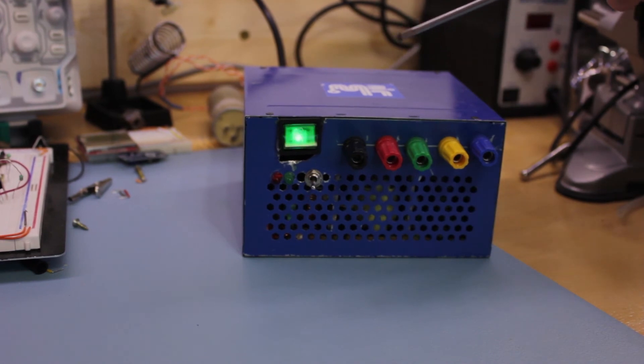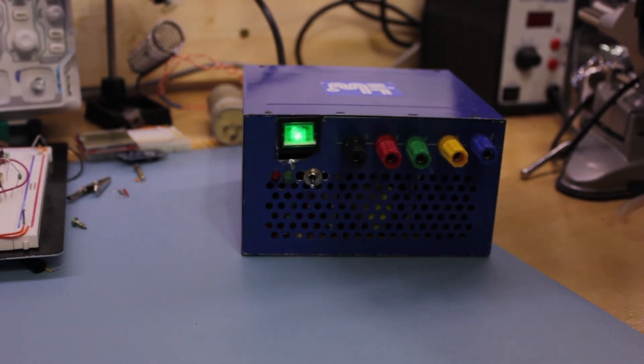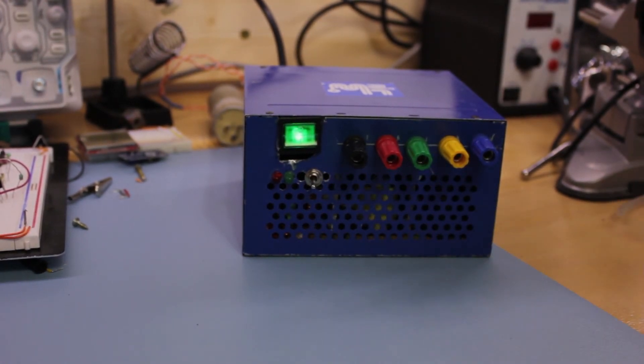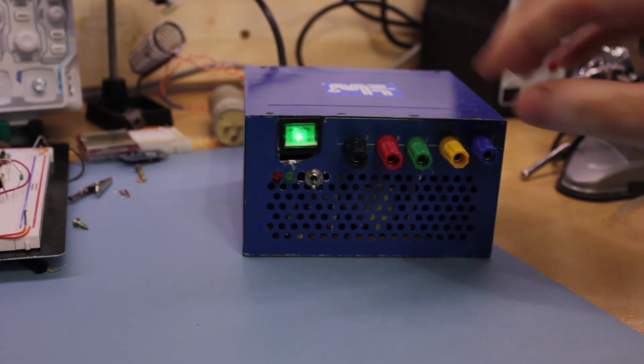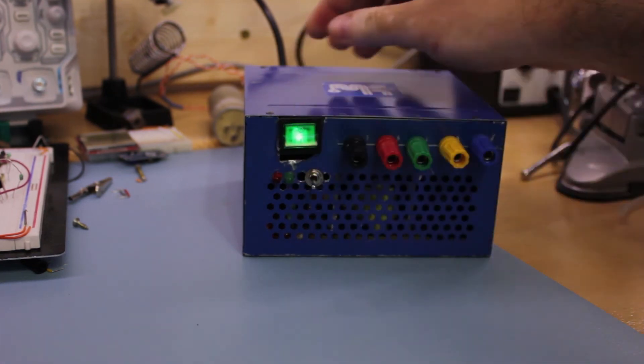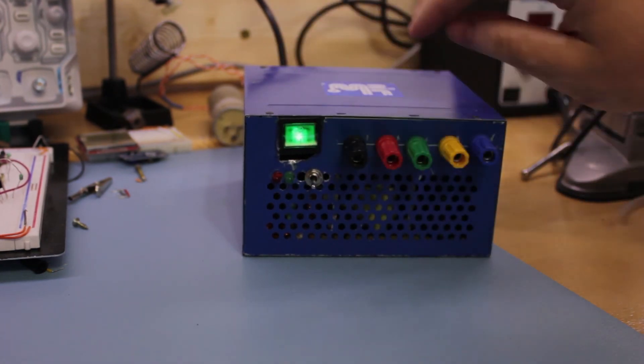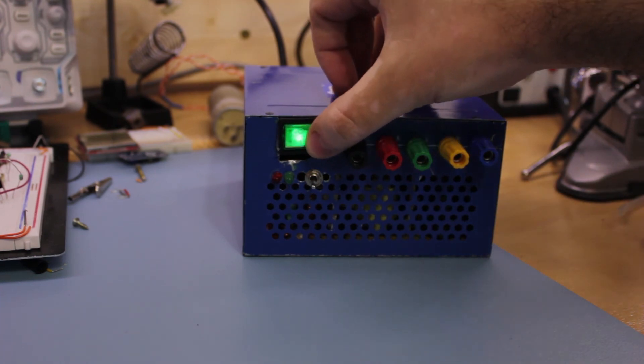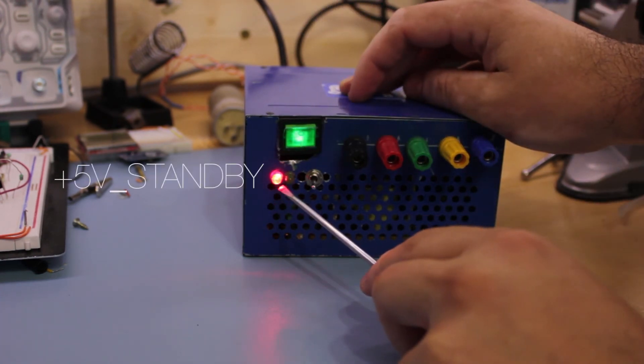With everything assembled, this is the ATX PSU working. When plugged into mains voltage, the mains power switch turns on. When that switch is turned on, the red LED turns on to let us know standby mode is activated. The power rails are not yet on but it does indicate that the PSU has mains power.